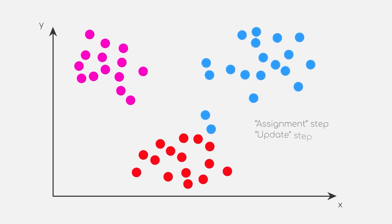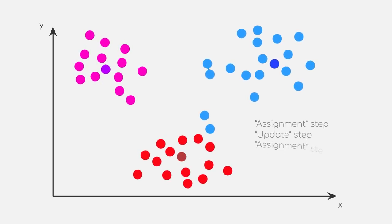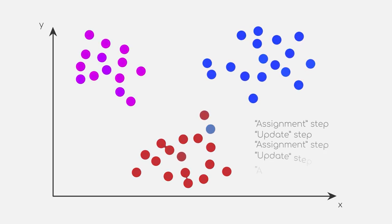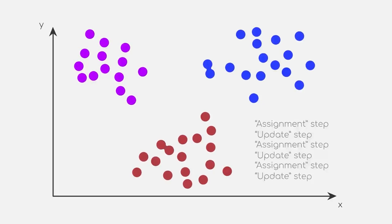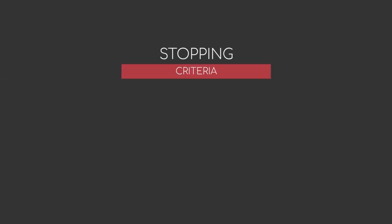We continue by recomputing center points, assigning new clusters, recomputing... well, does this ever stop? In fact, we need to define the stopping criteria. Otherwise, we will just loop forever.